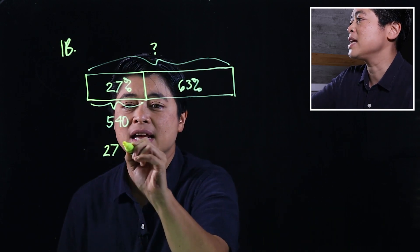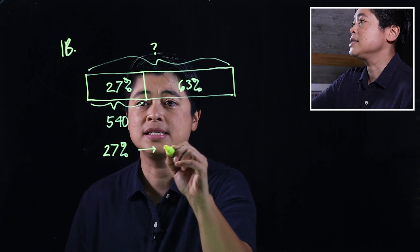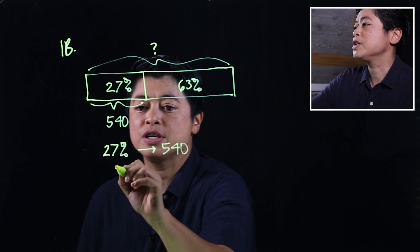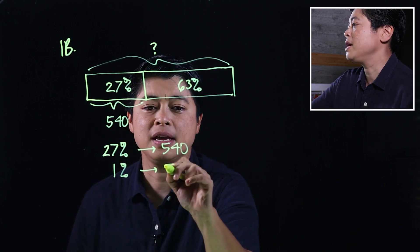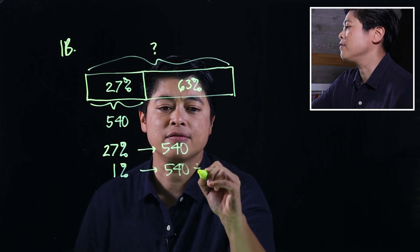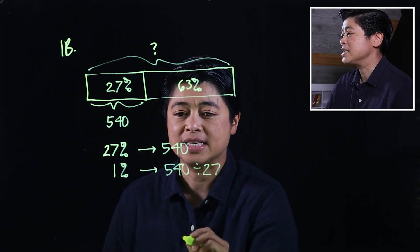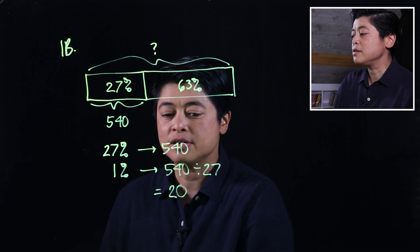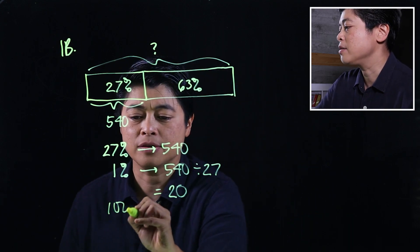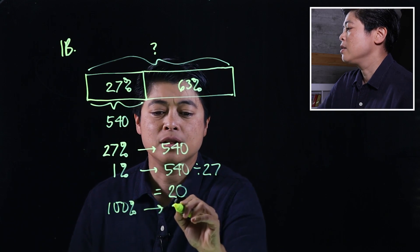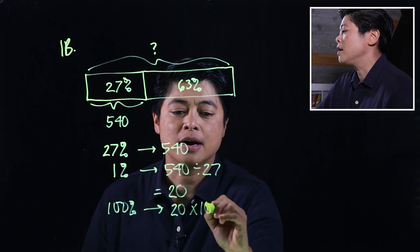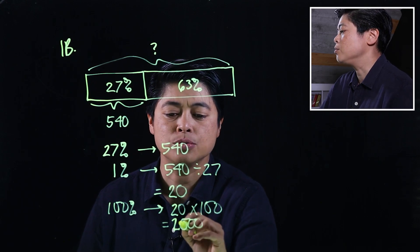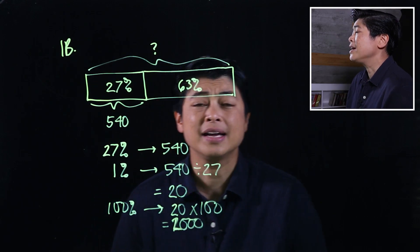Which means we know that 27 percent is 540 pupils. Which makes 1 percent be 540 divided by 27, making it 20. Since we want 100 percent, that means 100 percent must be 20 times 100, making it 2000 students. So again, this is the book's way.